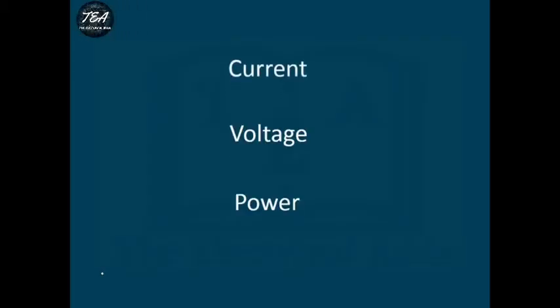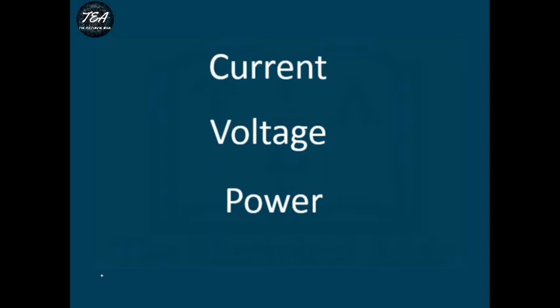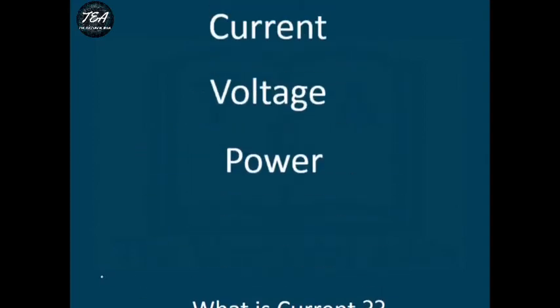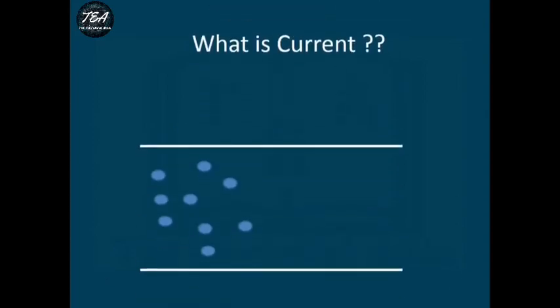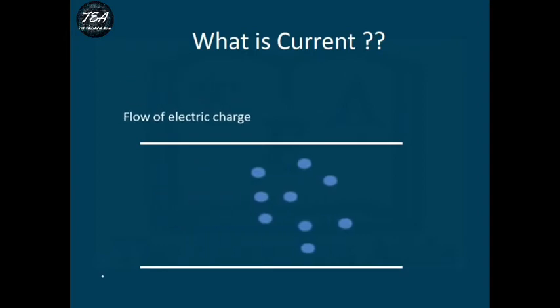We will see the concept of current, voltage, and power in electrical circuits, and how they are related with each other. Let's start with current. In simple terms, current can be defined as a flow of electrical charge.